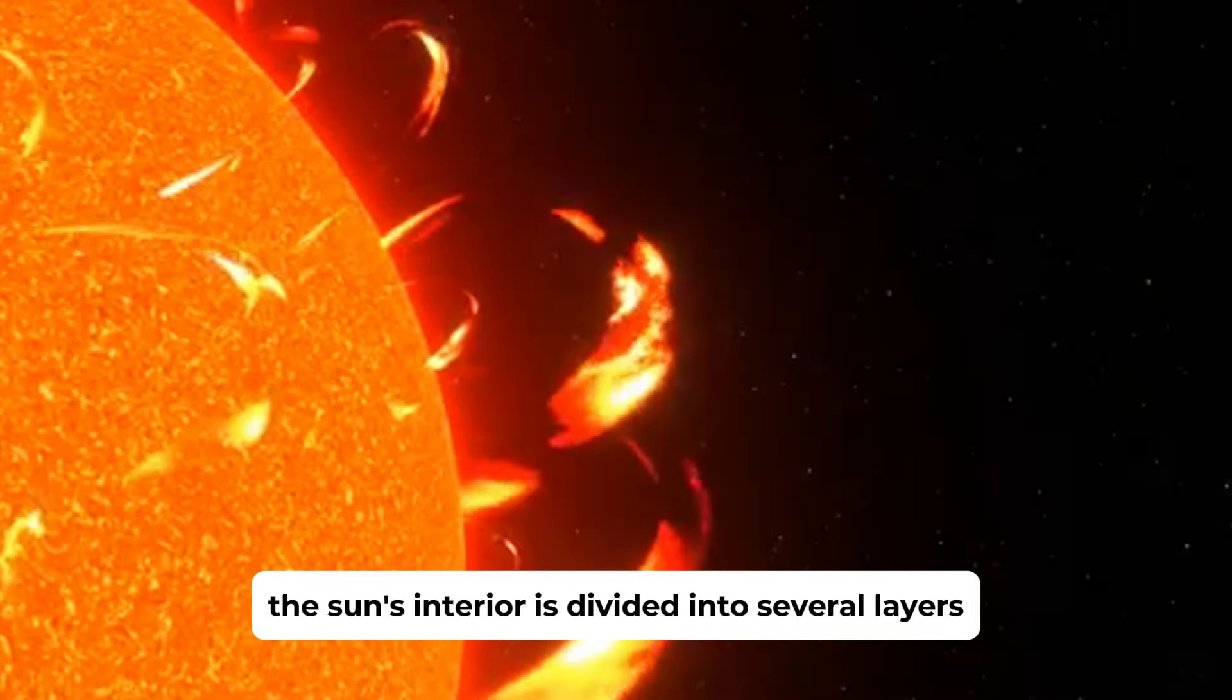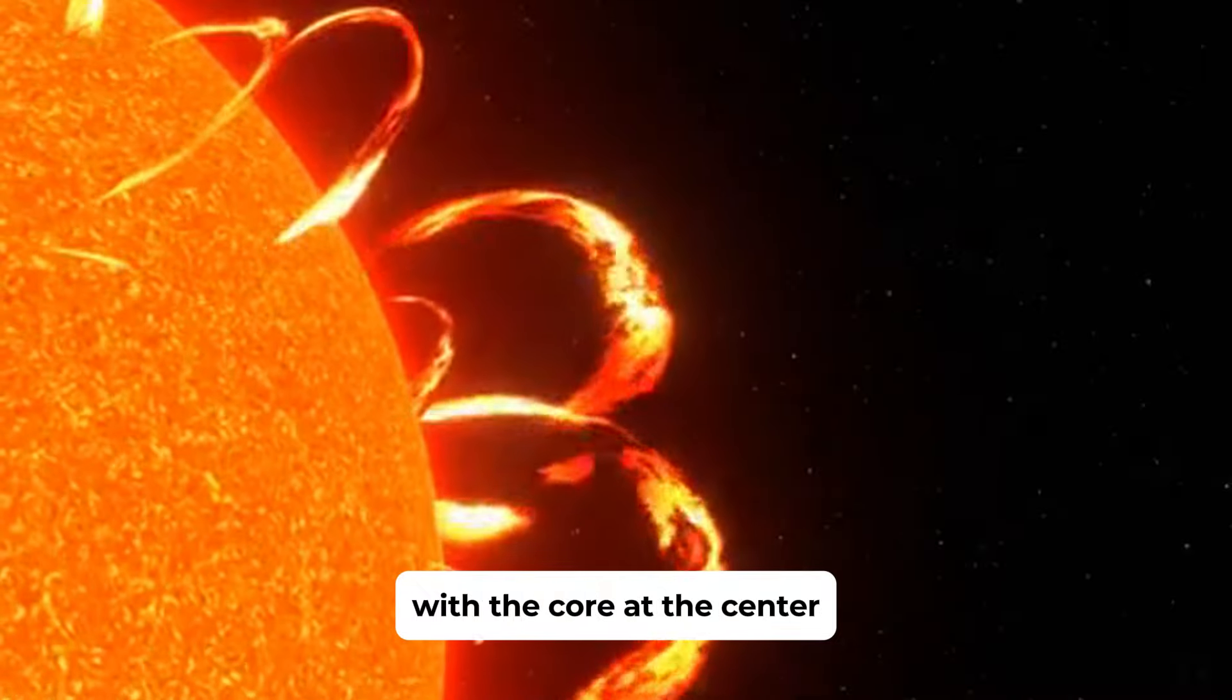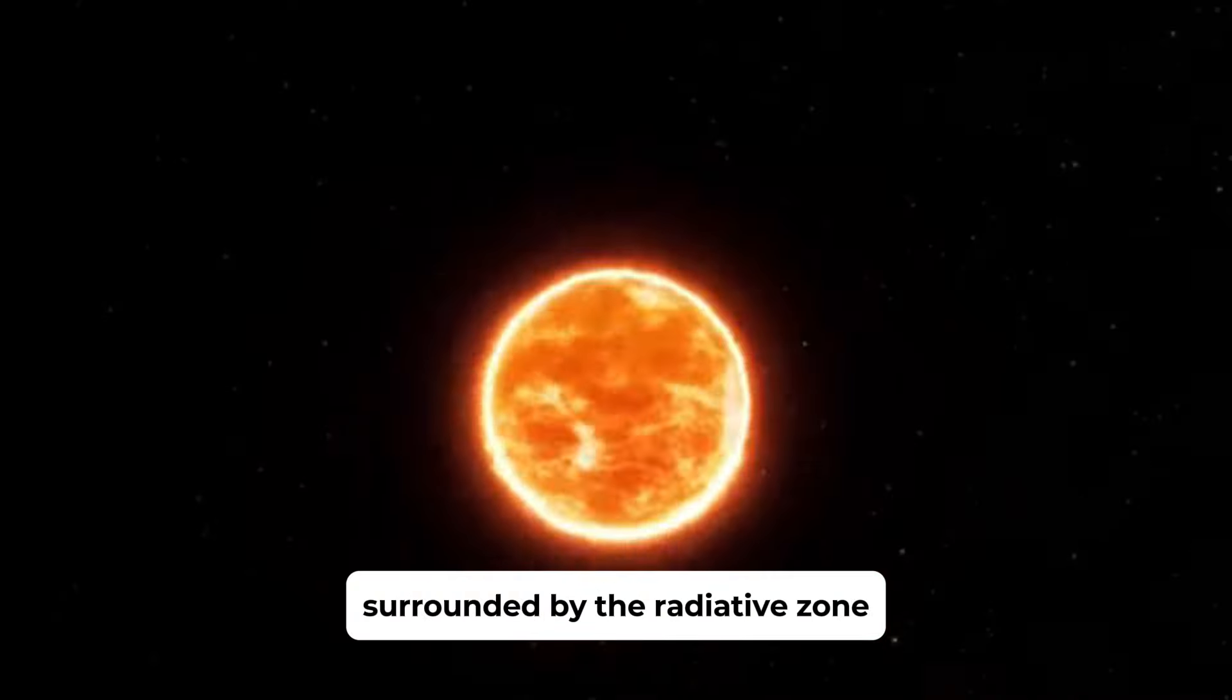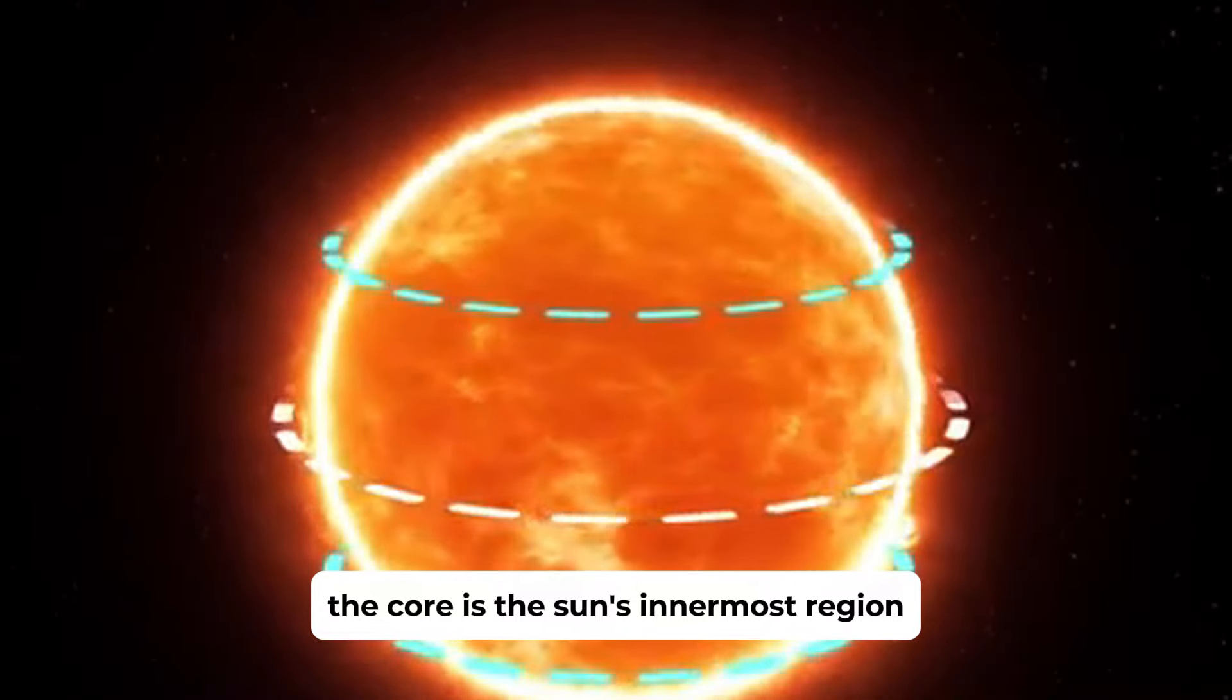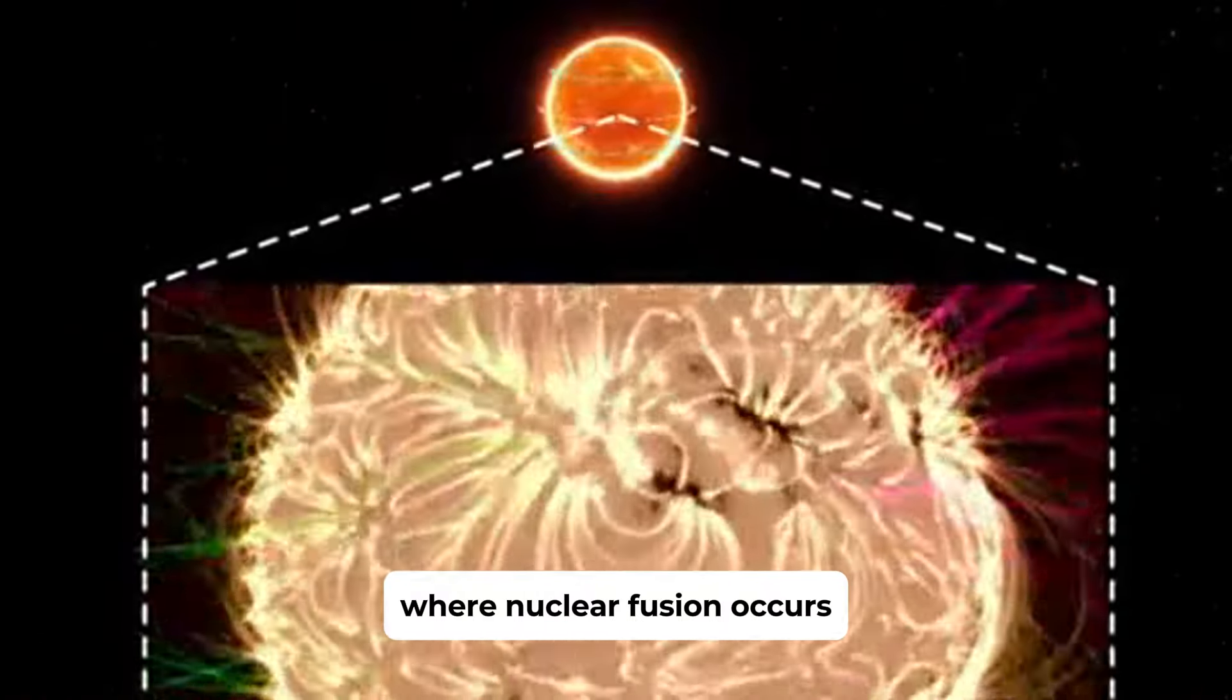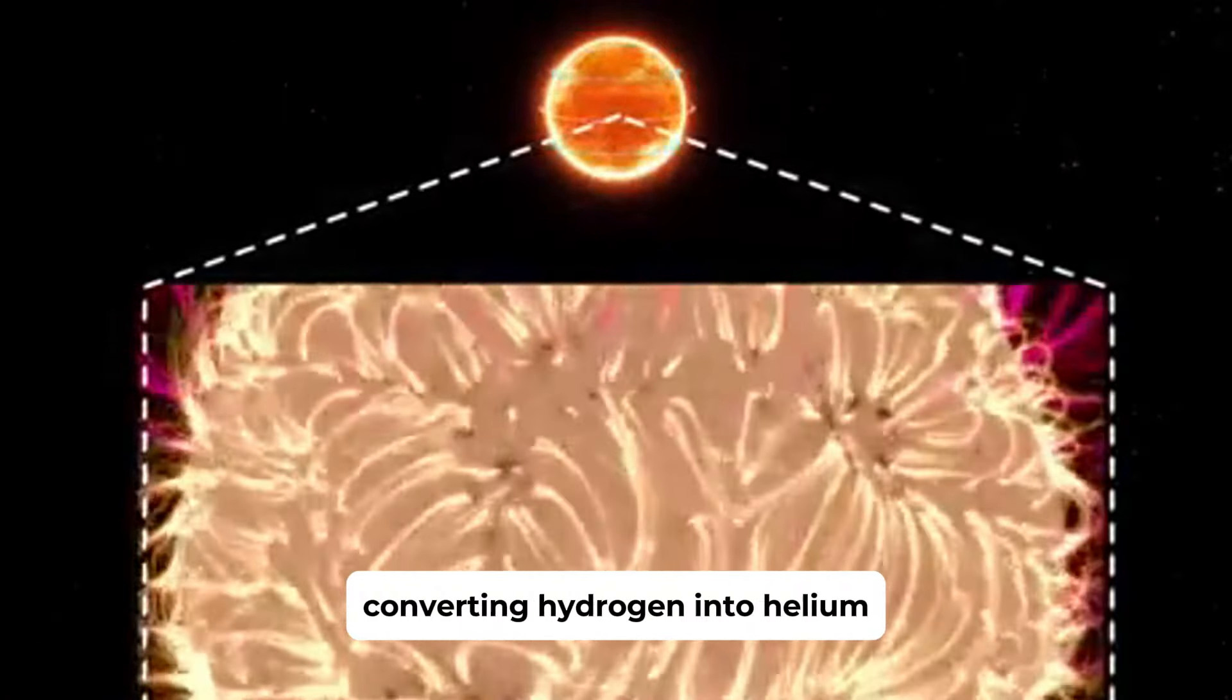The Sun's interior is divided into several layers, with the core at the center, surrounded by the radiative zone and the convective zone. The core is the Sun's innermost region where nuclear fusion occurs, converting hydrogen into helium and releasing vast amounts of energy.